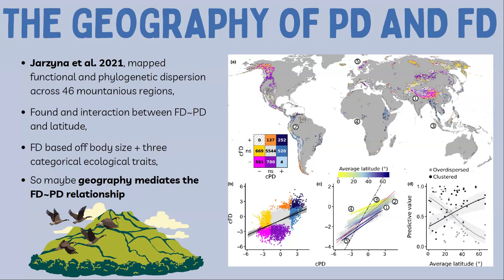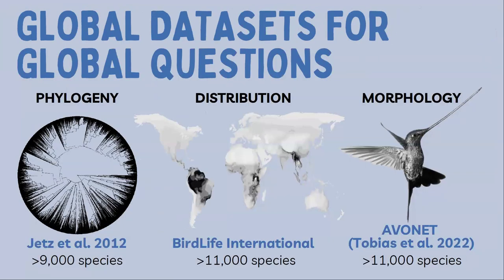If they had waited one year, they would have been able to do what I did. I set out to re-examine Josana's approach and see if it was generalisable outside of mountainous regions — whether latitude mediates the FD-PD relationship across the planet. I was in a lucky position: in my third year of PhD, COVID had ruined my museum plans in Europe, and we had all available data. We've had a near-complete bird phylogeny for over 10 years — the Jetz et al. phylogeny — though it has well-known problems, and apparently a new bird phylogeny is right around the corner.